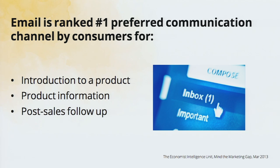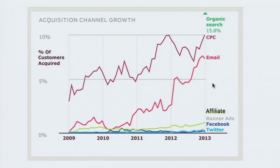You can really target your content and segment your subscriber base to send them the most relevant information. To put email in a bigger perspective with other digital communications, this graph shows the percentage of customers that you can acquire through these methods. Organic search is the top — that's why SEO is very important for brands. Cost per click is the next highest, and email ranks just below that. Compared to the very bottom, social media and banner ads, where your message goes out to a very mass audience, you don't generate that lead quality or acquire as many customers as you would by targeting and personalizing with email.